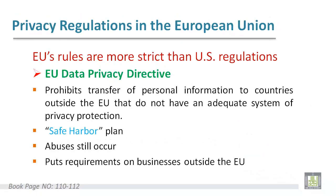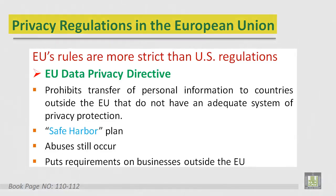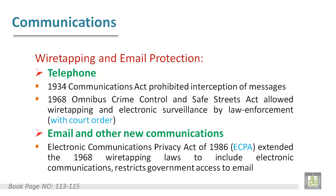Now let's compare US regulations and European Union regulations about privacy. European rules are more strict than US regulations. In the European rules, they prohibit transfer of personal information to countries outside the European Union that do not have an adequate system of privacy protection. Many privacy advocates describe the US privacy policy as behind Europe because the US does not have comprehensive federal legislation regulating personal data collection and use.